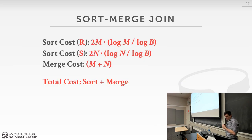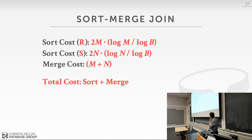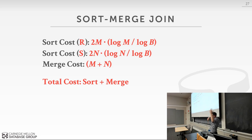The cost for sort-merge join: you have the sort cost of the outer table, the sort cost of the inner table — using the external merge sort formula from last class — and then the merge cost, which in the best case is just one sequential scan on the outer table plus one sequential scan on the inner table, M plus N. The total cost is the combination of sorting both tables plus the merge cost.